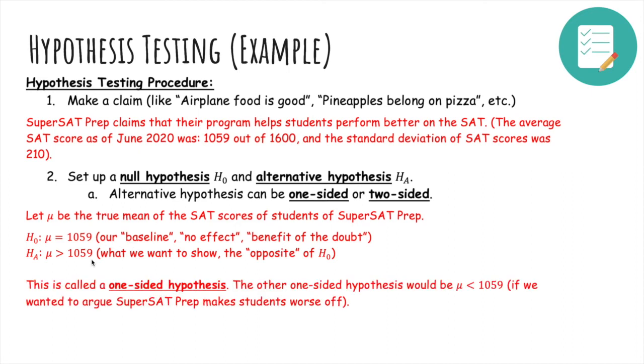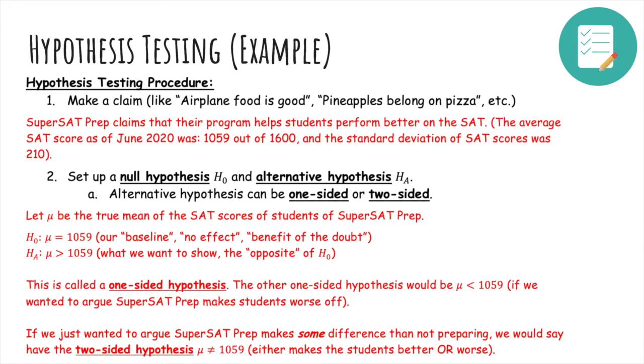And this is called a one-sided hypothesis. The other one-sided hypothesis is that μ is less than 1059, and that's if we wanted to argue that SuperSAT Prep makes students worse off. A two-sided hypothesis would be that μ is not equal to 1059, because it's two sides, less than or greater than. And that's if we wanted to argue that SuperSAT Prep makes some difference, either for better or worse.